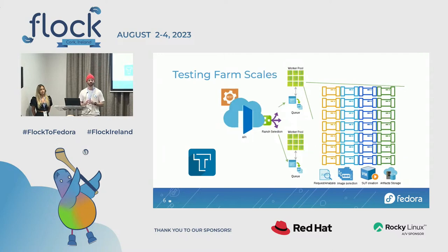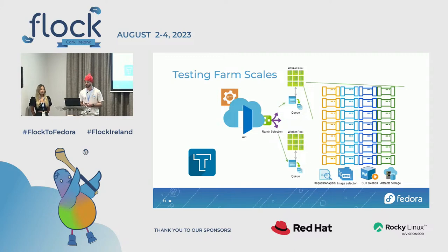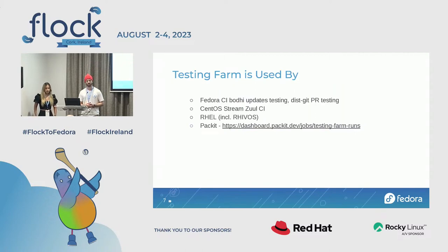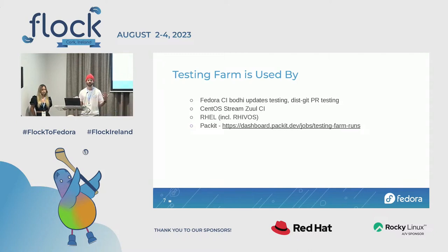You can run your tests on multiple OSes, multiple versions of those OSes, and multiple architectures — it scales. Some of you may have been at Adam Williamson's Fedora CI talk yesterday, where he talked about how Fedora CI uses Testing Farm. CentOS Stream's Zuul CI also uses Testing Farm. That's on the public ranch, and there's also a Red Hat ranch where all the RHEL releases are tested.